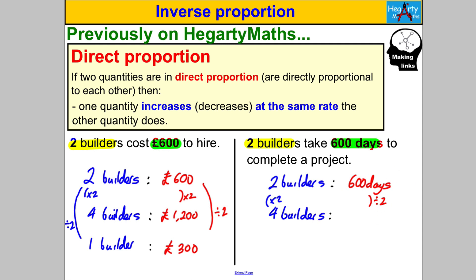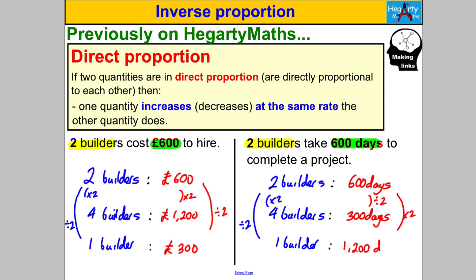Because the more builders you have on site, the less time it takes to finish. It's the same project. And what if you only had one builder? You know two builders take 600 days, so if you halved your number of builders — divided by two — it would take longer. It would double the length of your project because you've only got one builder, so it would take 1200 days.